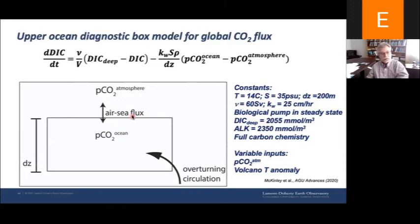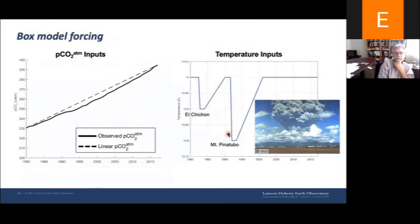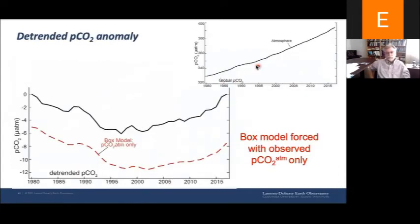We developed a very simple upper ocean diagnostic box model for the global CO2 flux. It is a single box of about 200 meters depth, affected by an overturning circulation bringing up waters with low anthropogenic carbon content to the surface. The single equation describes the time evolution of DIC as a function of overturning circulation and air-sea exchange. There is no biological term because the biological pump is assumed to be in steady state — export of organic carbon equals return via circulation, so those terms cancel. We force the model with observed atmospheric pCO2 and volcanic temperature anomalies.